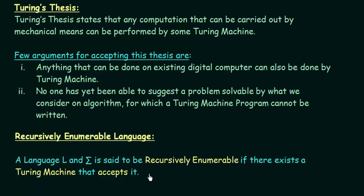In this lecture, we have studied the formal definition of Turing machines, the Turing thesis, and the languages accepted by Turing machines, which are the recursively enumerable languages. From the next lecture, we will be taking examples of Turing machines, where we will see how Turing machines are designed and how they actually work. Thank you for watching, and see you in the next one.